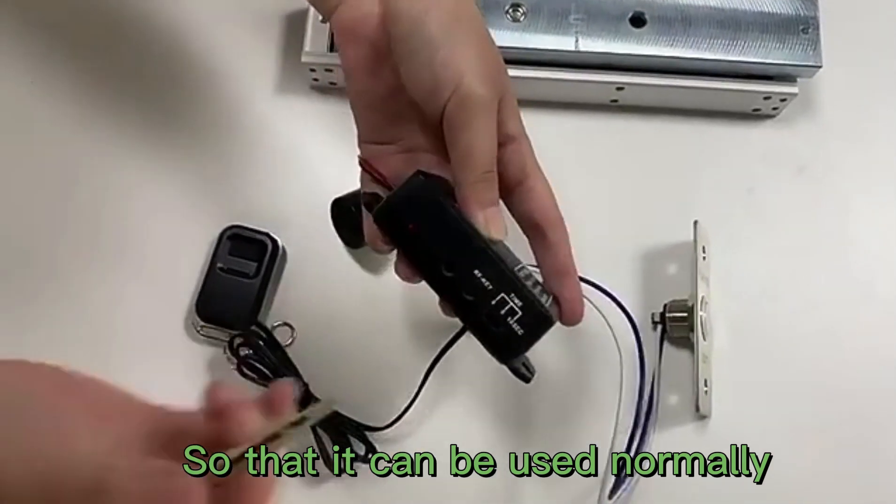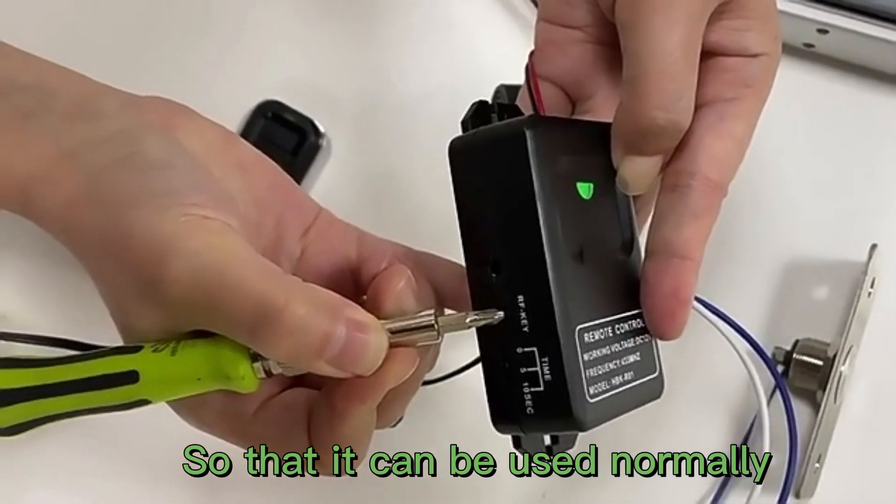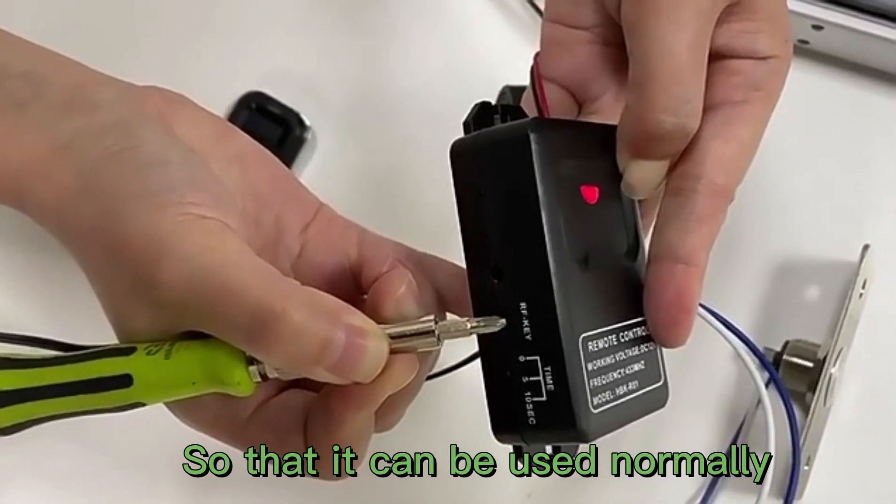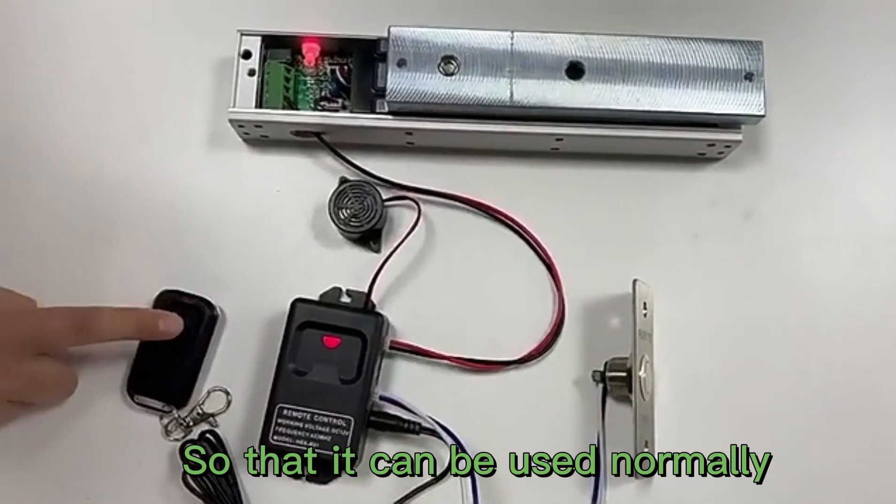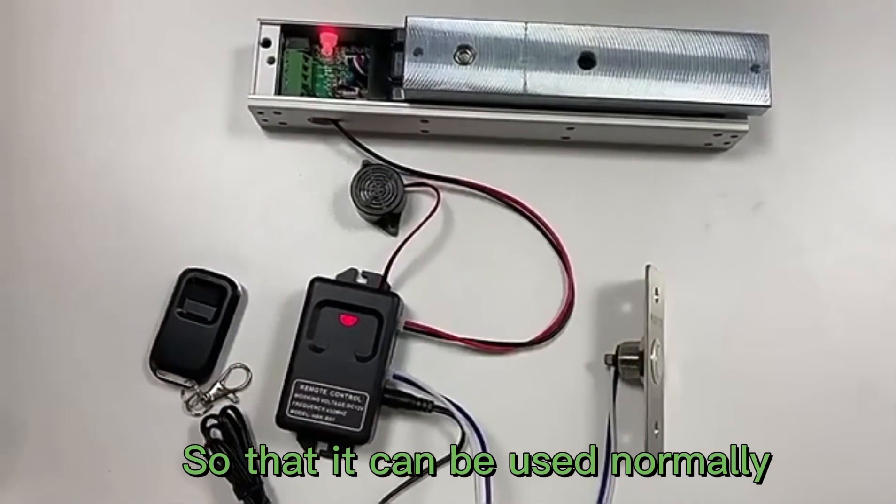To clear the code, press and hold the RF button for 8 seconds until the indicator changes from green to red. When you press the transmitter again, the lock will not unlock, which indicates the code is cleared successfully.